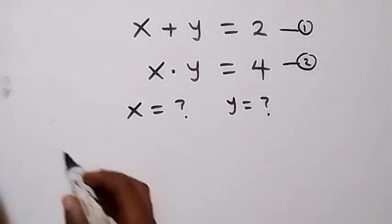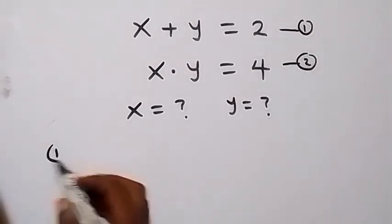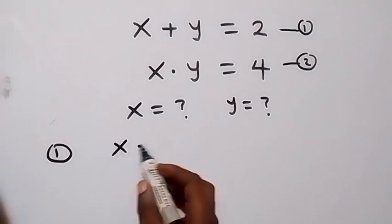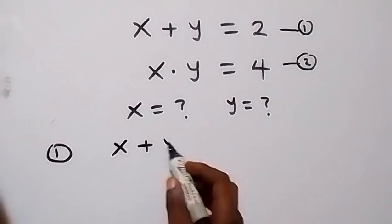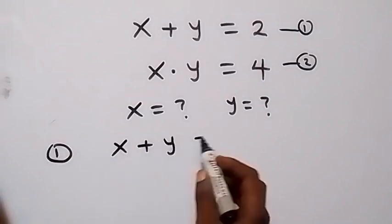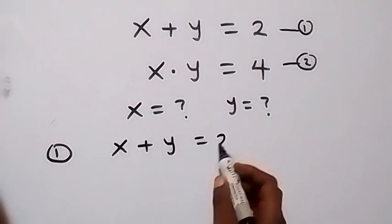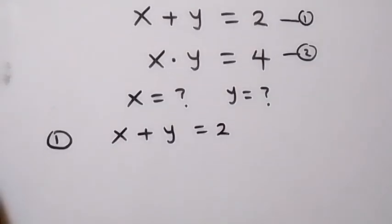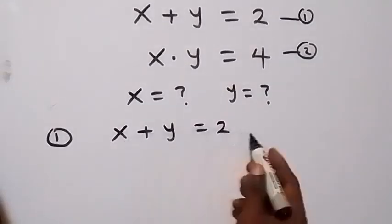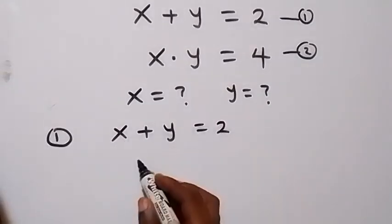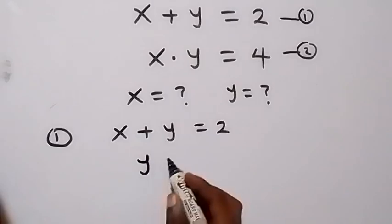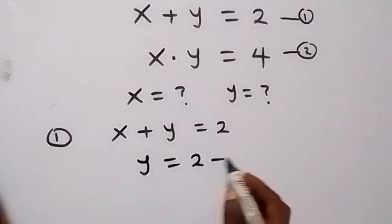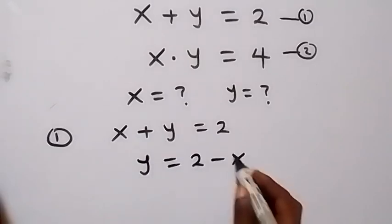From equation 1, we have x plus y equals to 2. Now let's make y the subject here and take x to this side, so we have y equals to 2 minus x.